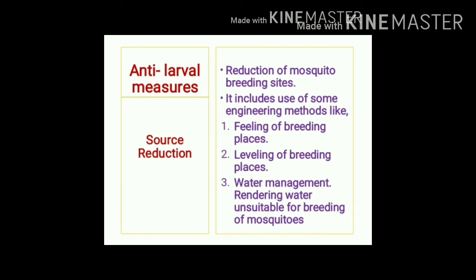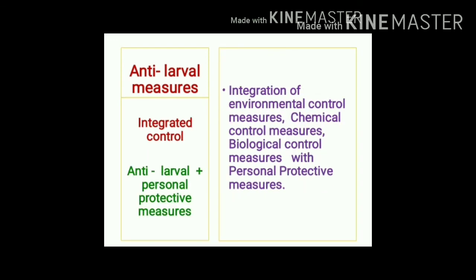Source reduction means reducing mosquito breeding sites using engineering methods such as filling or leveling breeding places, and water management to render water unsuitable for mosquito breeding. Integrated vector control combines environmental control (source reduction), chemical control (larvicides), biological control (Gambusia fish), and personal protective measures.